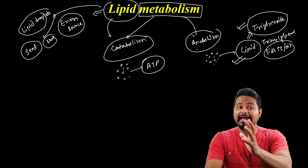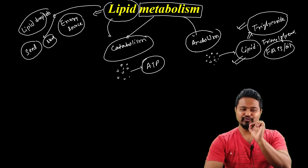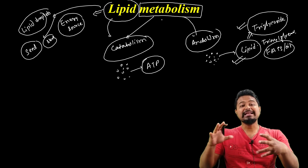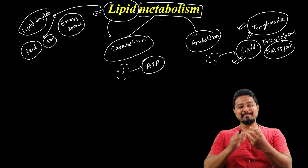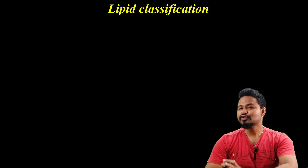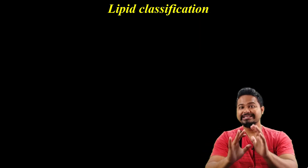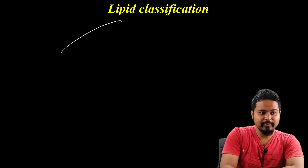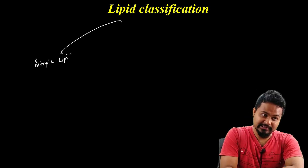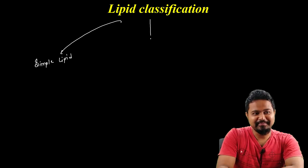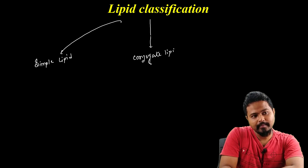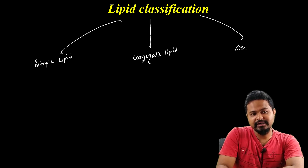The synthesis of lipids is called anabolism. Now for lipid classification, I'm going to tell you three main categories: simple lipids, conjugate lipids, and derived lipids.